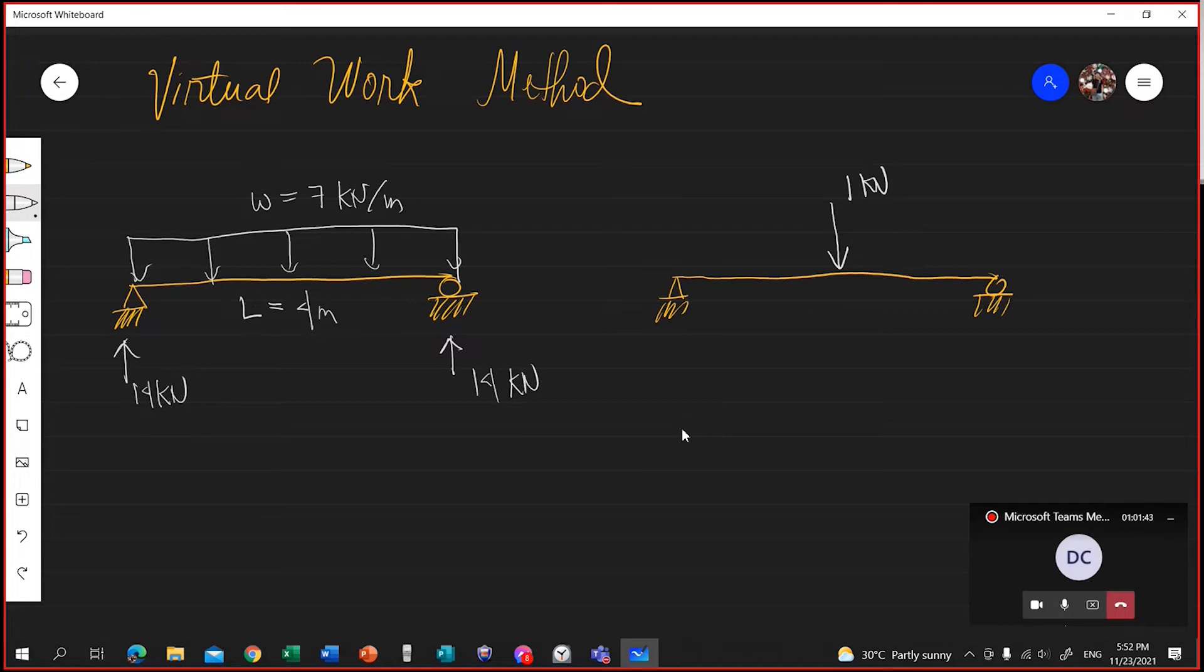You place a unit load where you want to find the deflection. Now for this case, we want to solve the deflection at the mid-span. So that's where you place the unit load. The magnitude of this load is 1 kN. That's why it's called unit load. Now for this case, the reaction here is 1 half kN. Here, this is 1 half kN.